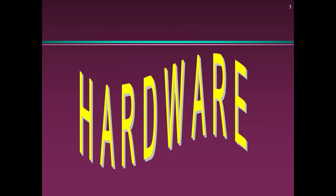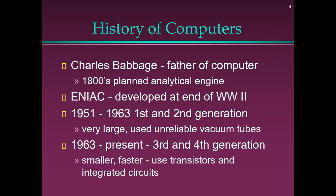History of Computers: Charles Babbage, Father of Computer, developed the Analytical Engine in 1800. The Electronic Numeric Integrated Analytic Calculator (ENIAC) was developed at the end of World War II. From 1951 to 1963, the 1st and 2nd generation computers used unreliable vacuum tubes. By 1963, the 3rd and 4th generations were smaller and faster, using transistors and integrated circuits.